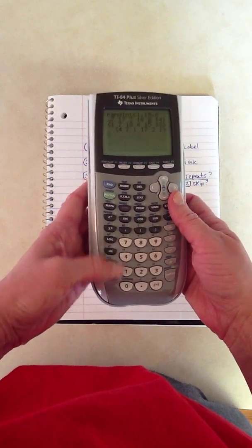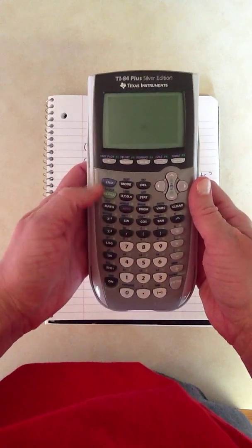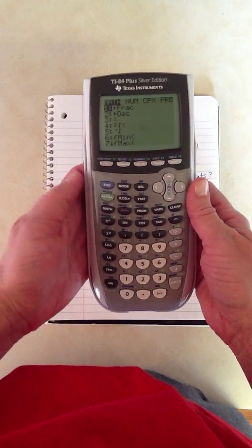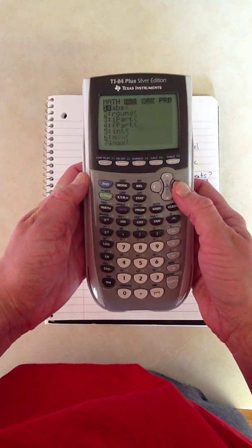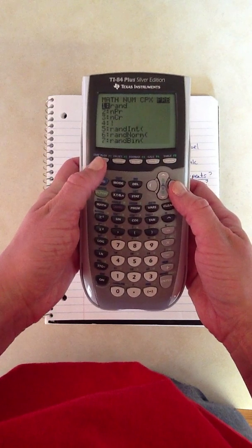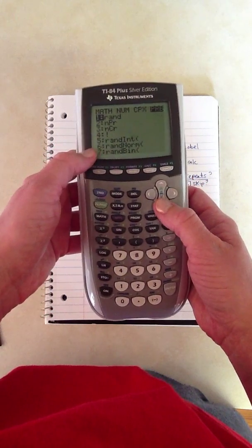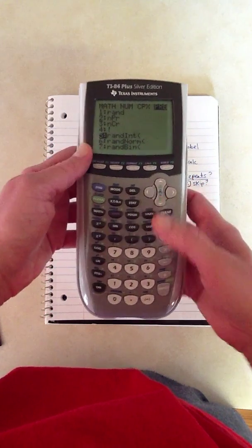So I would turn my calculator on, and I'm going to clear out what I have. I would hit the math button, and I'm going to go to the right to the probability key. This tab lists a bunch of things that you can do here, but I'm going to go to number five, which is random integers.